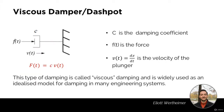Let's now look at viscous dampers or dashpots. Unlike springs, which create a force proportionately to a displacement, dampers create a force proportionately to a velocity, which is the derivative of a displacement. So the mathematical expression for a damper is: force with respect to time equals c, the damping coefficient, multiplied by the velocity with respect to time. The velocity is the velocity of the plunger — the velocity of the extremity of the damper and how fast the chamber inside of it is moving. The force created by the damper is directly proportional to the velocity of its plunger, proportional with respect to the damping coefficient.